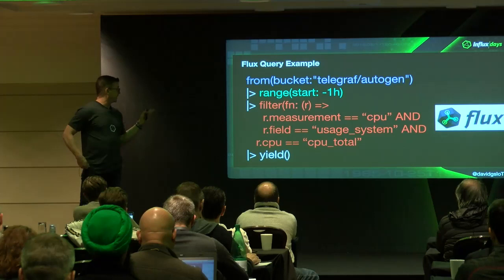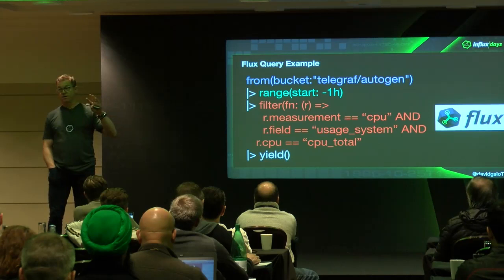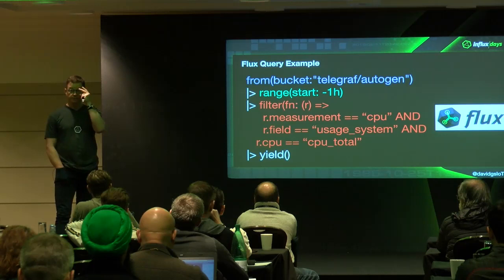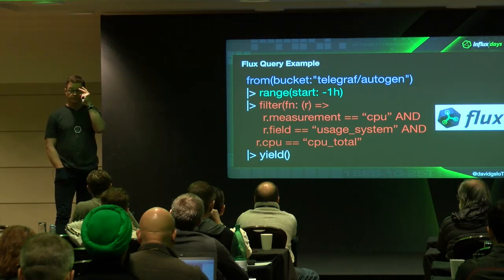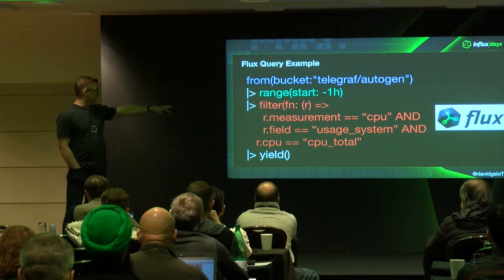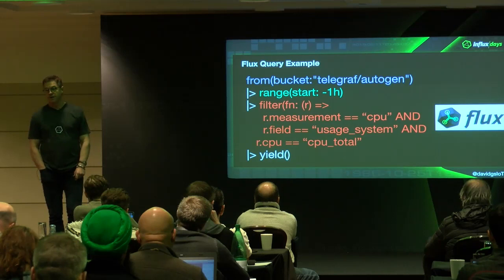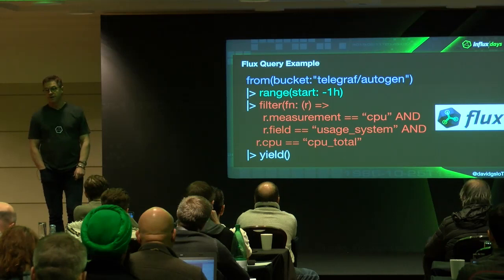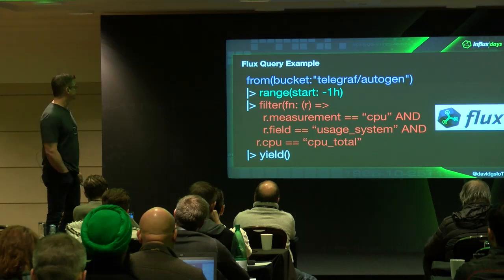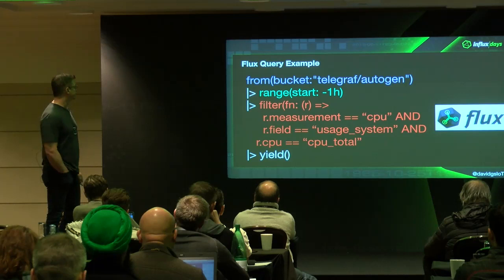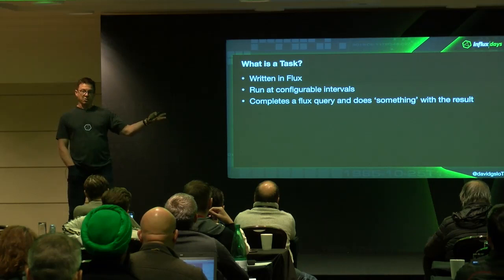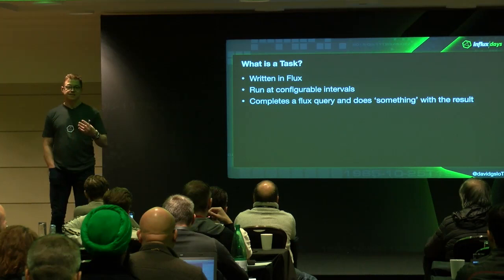Here's a quick Flux example: always have a time range — not having one can easily send you into an out-of-memory loop and bring the machine to its knees. Then filter on measurement — get the CPU, the field usage_system, and filter for CPU total. Then call yield. In the Chronograf UI, you don't actually have to call yield — the UI assumes the last operation calls yield and does it for you.